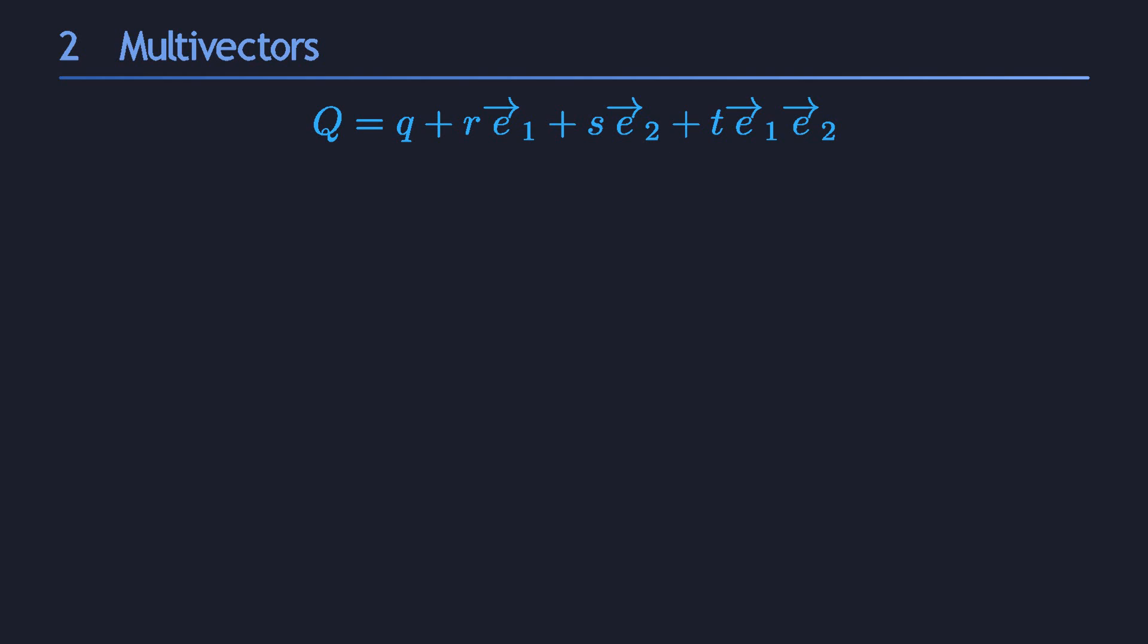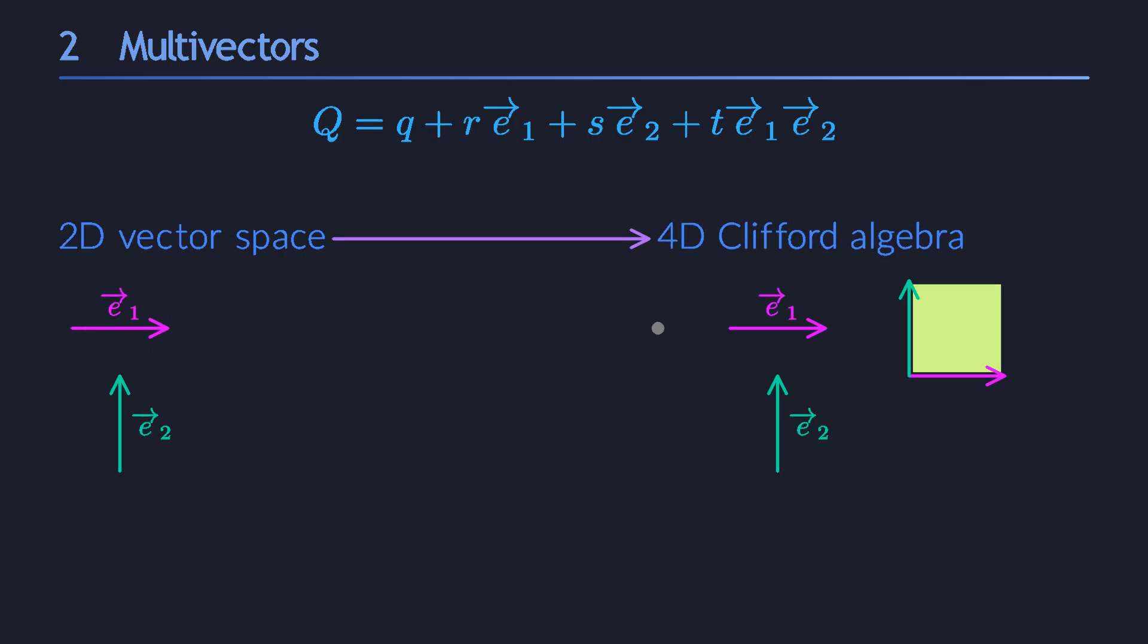At this point, it may be useful to spend some time getting used to the two different levels of vector spaces that we are playing with here. We started from an ordinary two-dimensional vector space, with E1 and E2 as its basis vectors. But now, we are operating in a four-dimensional space, where the scalars and the bivectors are also treated as vectors. They aren't vectors in the original perspective, but they are in the new one, because we're using them as a 4D basis for the Clifford algebra.